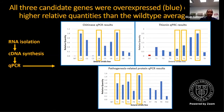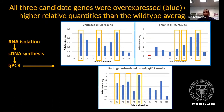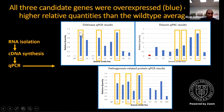Now for qPCR: all three candidate genes were overexpressed, displayed in blue, and showed higher relative quantities than the wild type average displayed in red. Using these results, we selected the highlighted lines — those with the yellow boxes around them — for pre-experimental bioassays.